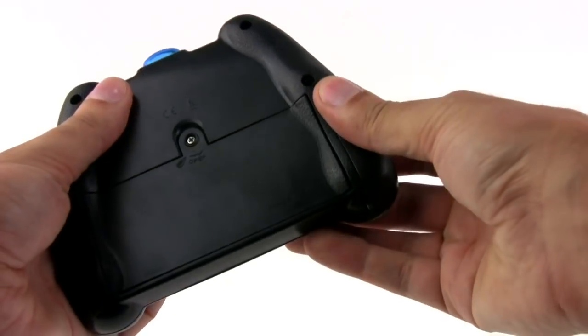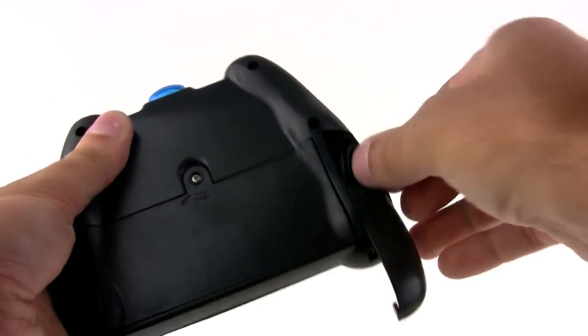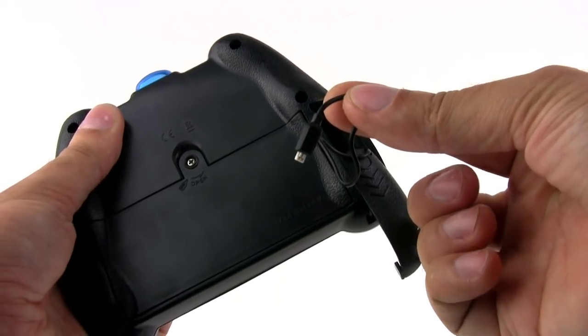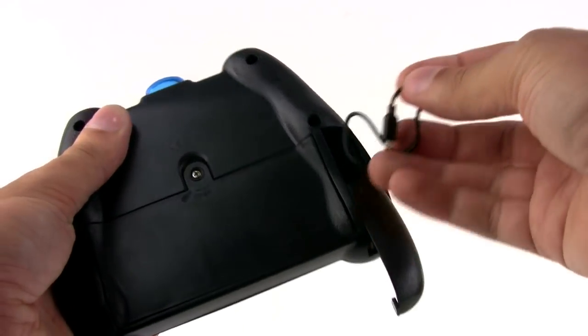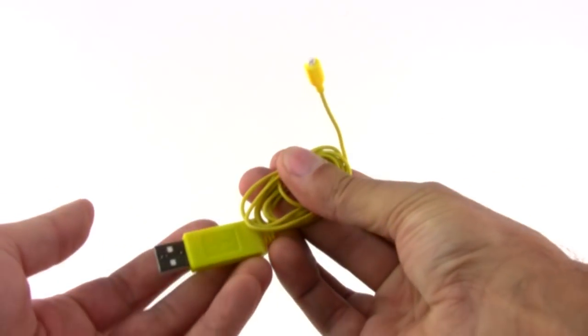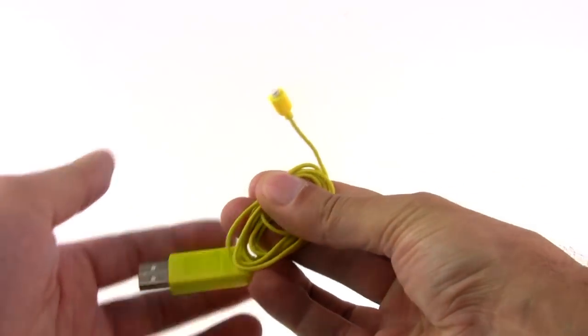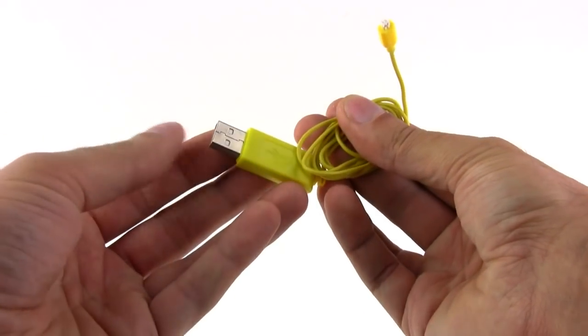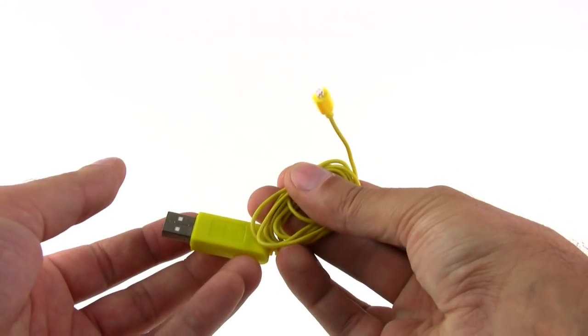On the back behind this door is a charging port. You hook that up to your helicopter and you can charge it directly. But you don't have to use this. They also include this USB adapter that plugs right into your helicopter. It allows you to charge your helicopter from your computer practically for free. You don't have to use up those double-A batteries that are in the controller.